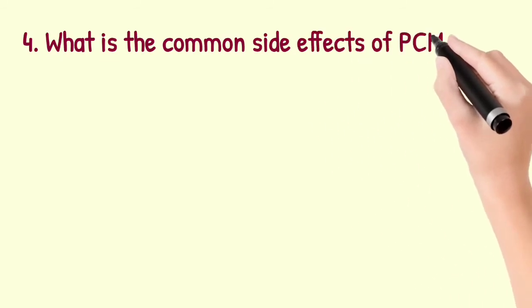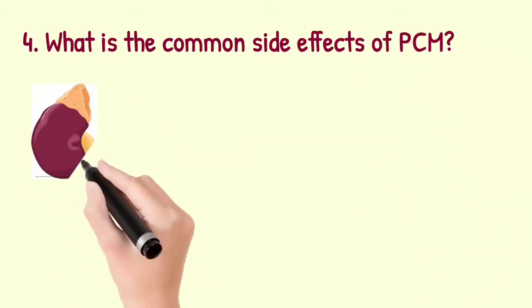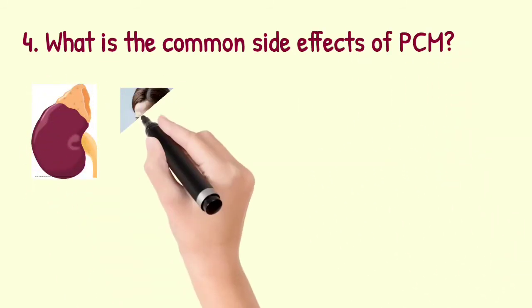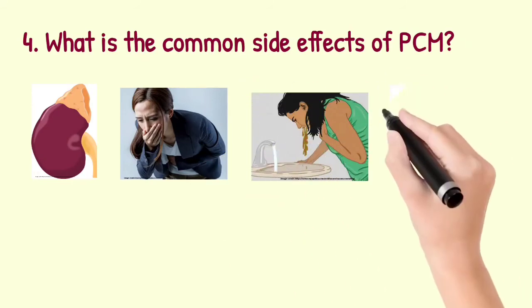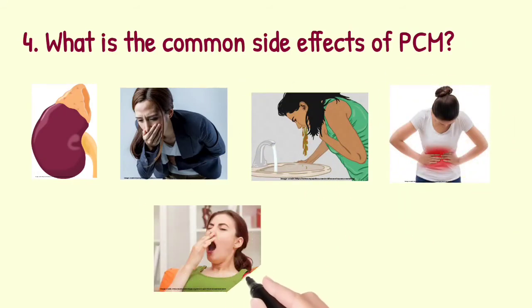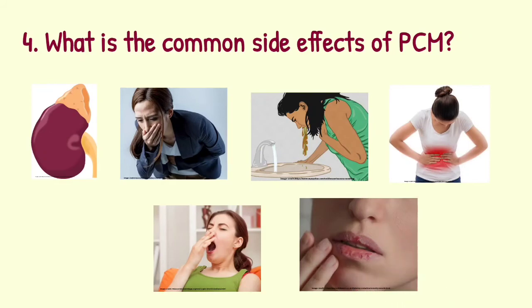What are the common side effects of PCM? Renal failure may occur because of high prolonged doses, then nausea, vomiting, abdominal pain, and drowsiness. And last is dry mouth.